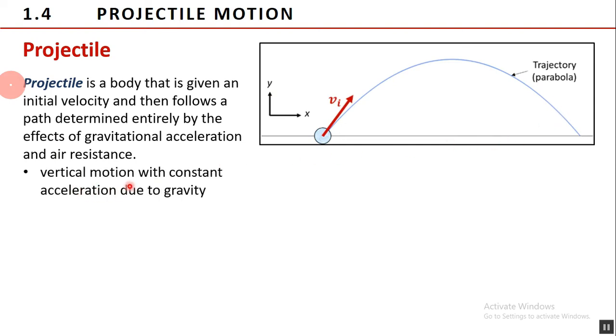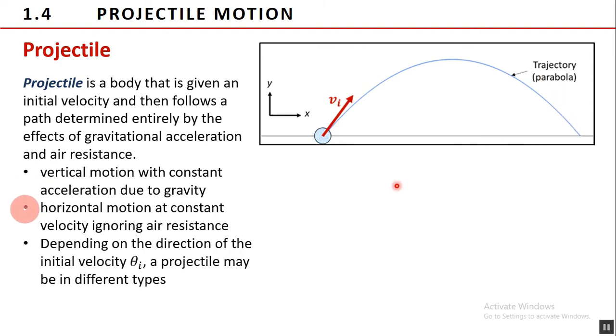The projectile moves vertically with constant acceleration due to gravity, 9.8 meters per second squared. The projectile moves horizontally at constant velocity when the effects of air resistance is negligible. With these two assumptions, basically a projectile is a two-dimensional freefall which has a trajectory of parabola. When we say trajectory, it is a path followed by a projectile.